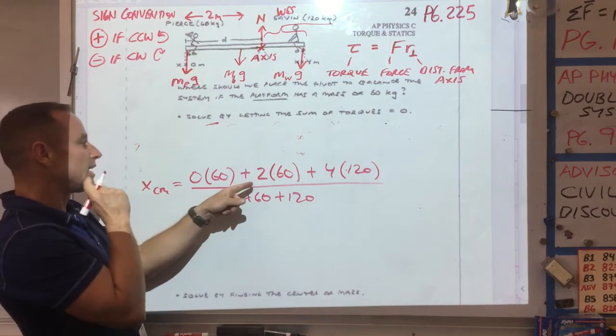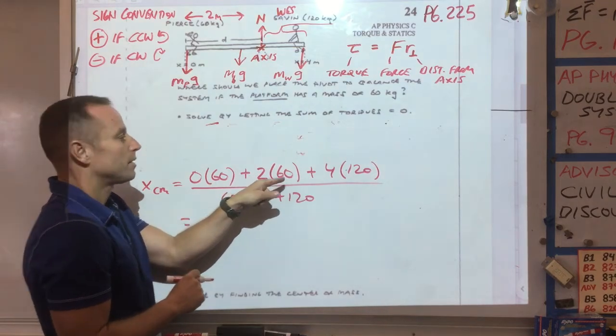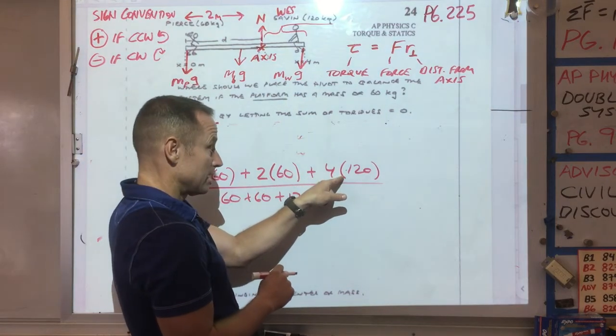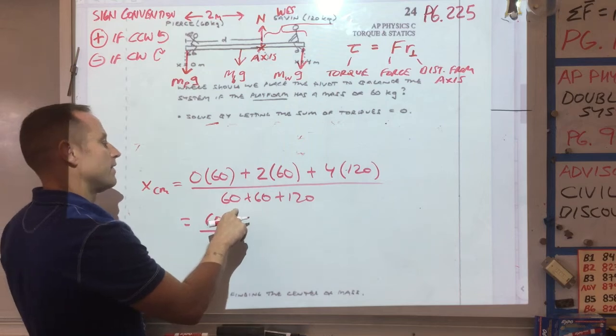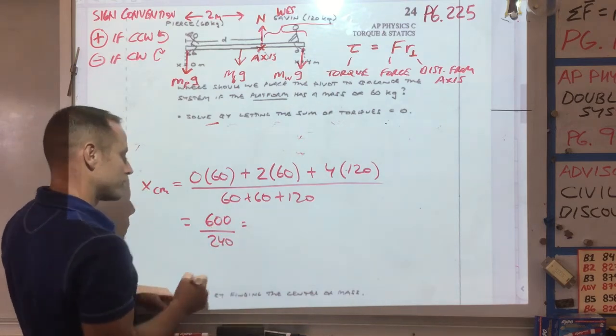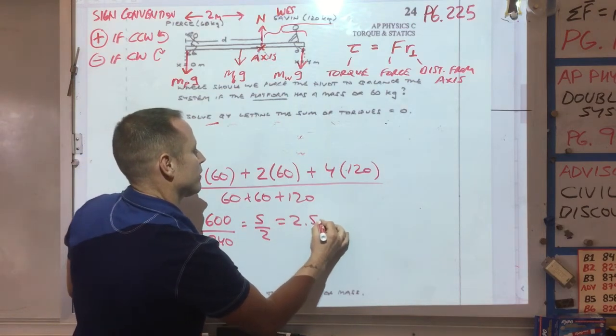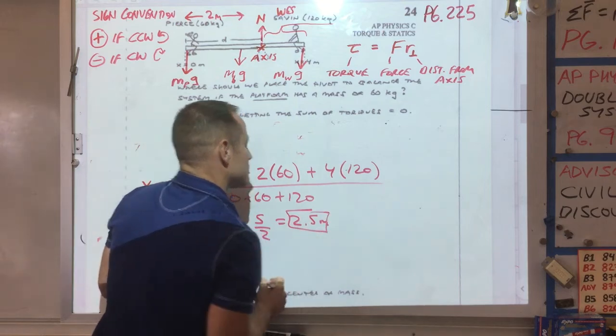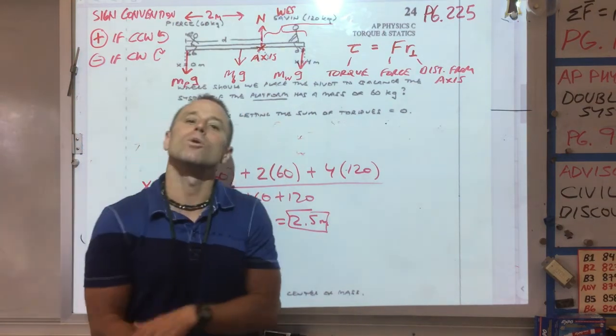And then we've got to divide by the total mass, which is going to be 60 plus 60 plus 120. So it looks like we get 120 plus 480, so that's going to be 600 over 240. So we sort of already saw this 600 over 240, or 60 over 24, or 5 halves, which gives you 2.5 meters. So that's solving with the center of mass, as opposed to balancing the torques.